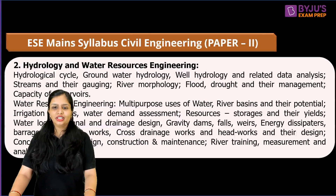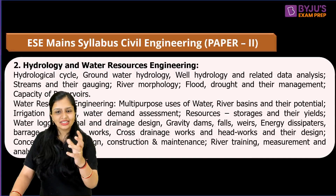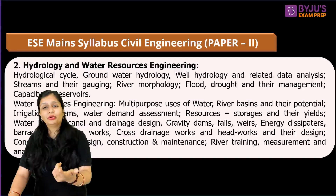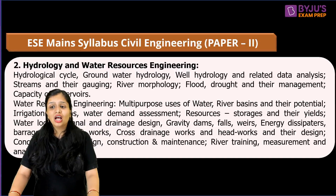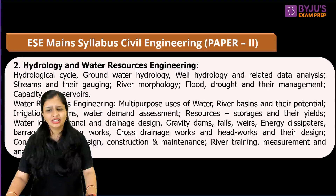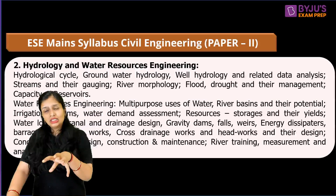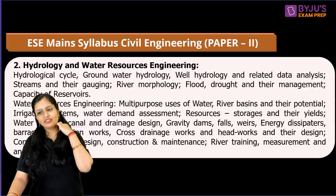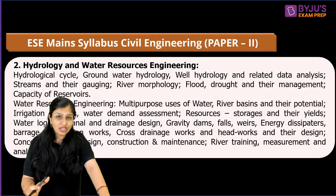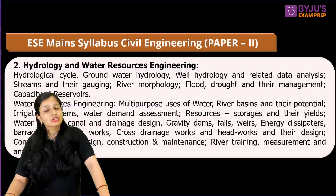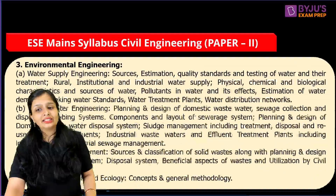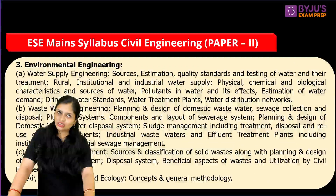Next is Hydrology and Water Resource Engineering, which covers both hydrology and irrigation. Groundwater hydrology includes well hydraulics, recuperation tests, and pumping tests. You also need to study types of droughts — meteorological, agricultural, and hydrological. For irrigation, there is a vast difference between GATE and ESE syllabi: ESE includes river training works, spillways, head works, and even the design of head works, which are not in GATE.